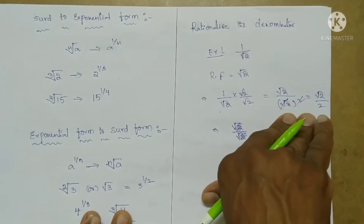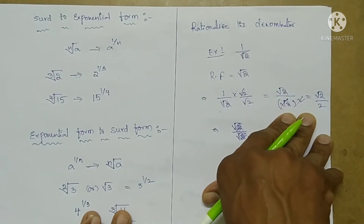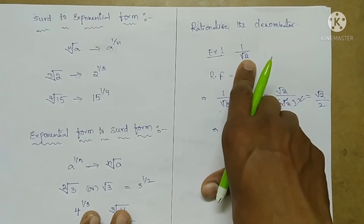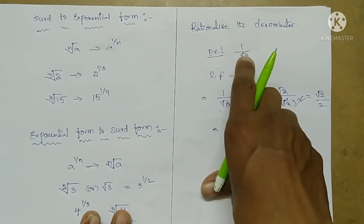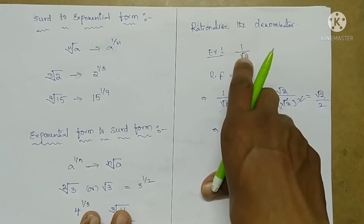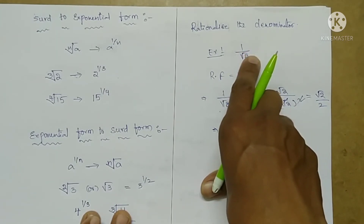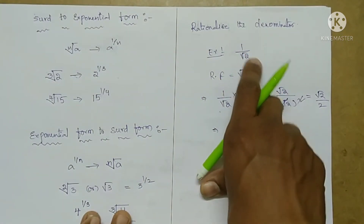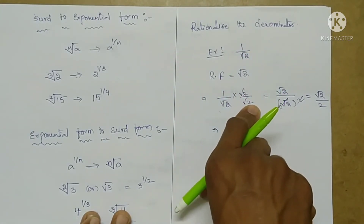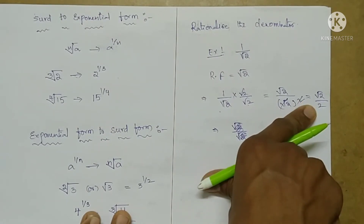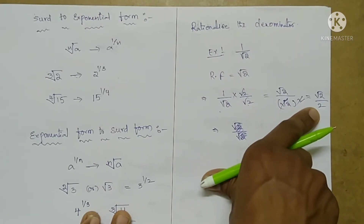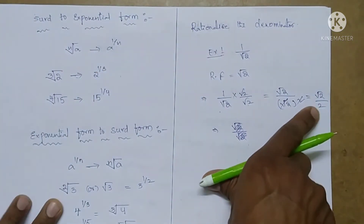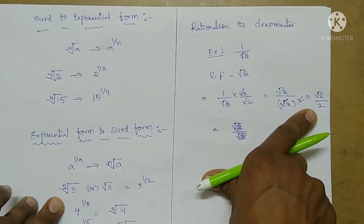Finally we get root 2 by 2 — here the denominator is a rational number, so the irrational denominator has been rationalized.